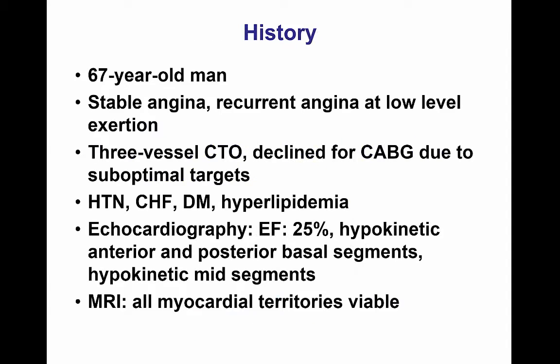This was a 67-year-old gentleman who presented with stable angina even at low levels of exertion and was found to have CTOs of all three vessels. After surgical evaluation, he was not considered a good candidate for bypass due to poor distal targets. He had multiple comorbidities: hypertension, heart failure, diabetes, and dyslipidemia, with an ejection fraction of 25 percent. However, all myocardial territories were viable on MRI imaging.